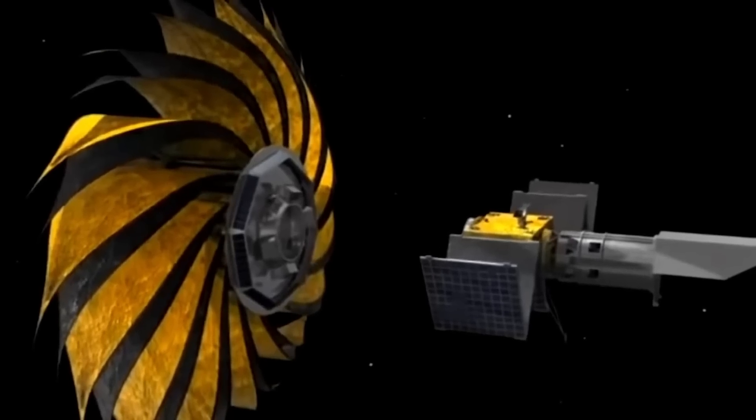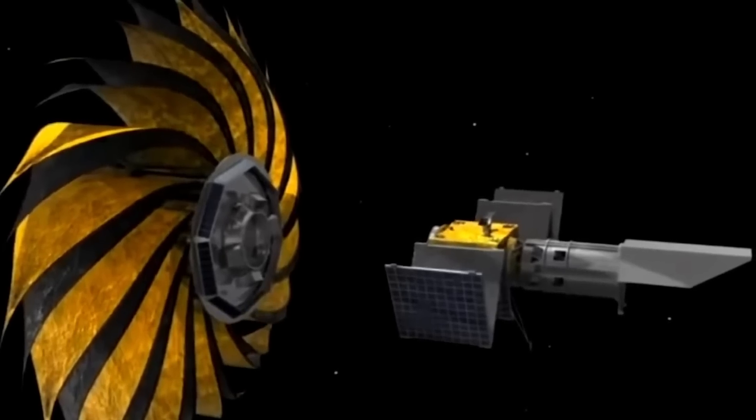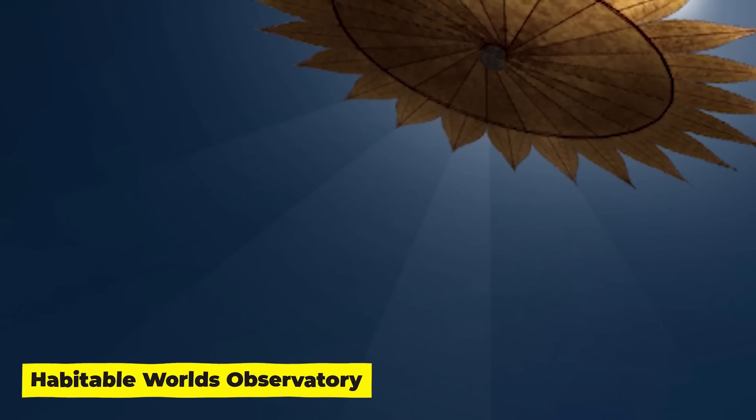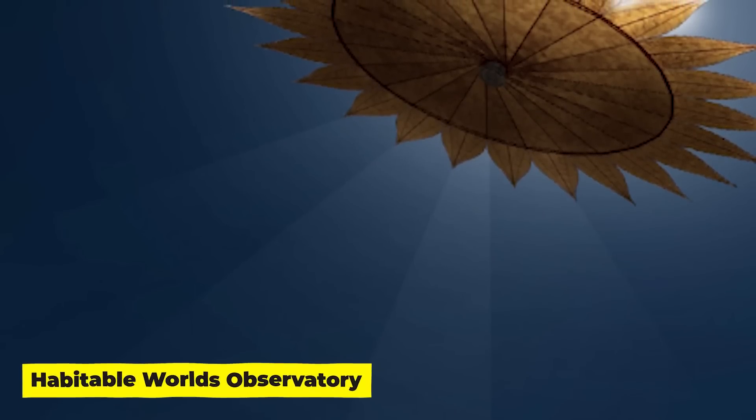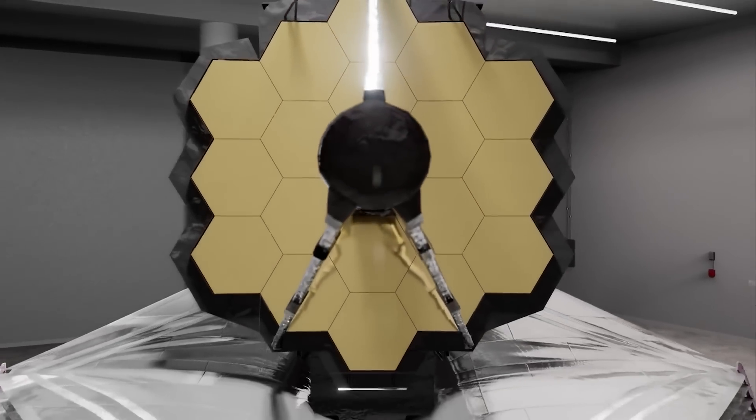Although little about the project is finalized, Clampin was able to share what NASA has come up with thus far, and reveal the working name for the telescope: the Habitable World Observatory. This is mainly because NASA doesn't yet have an approved budget for the project.